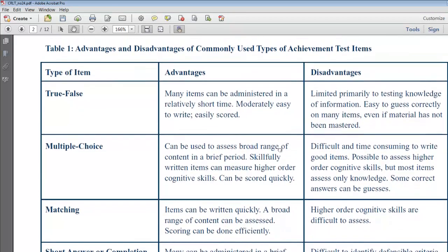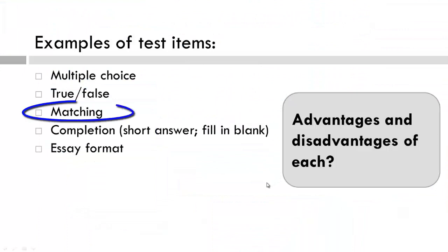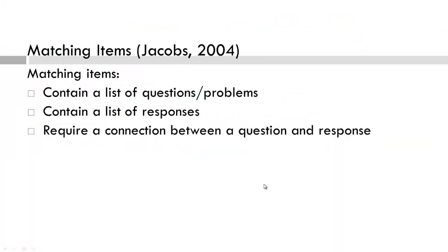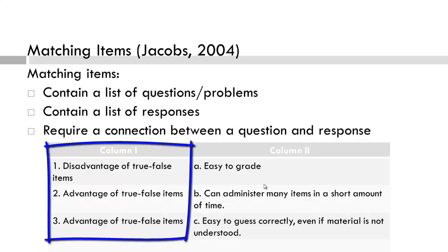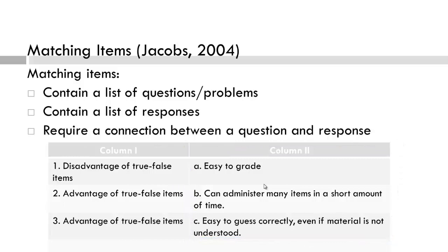Let's start with matching questions. Please pause to read the criteria for a matching item. This column lists the problems and questions, and this column lists the responses; your job is to connect them. This is based on what you just read about the advantages and disadvantages of various test items. Pause and match. Here are the responses — how did you do? Do you really understand, or did you guess? How effectively did this type of test item assess your understanding? These are questions to consider in your own test item development.